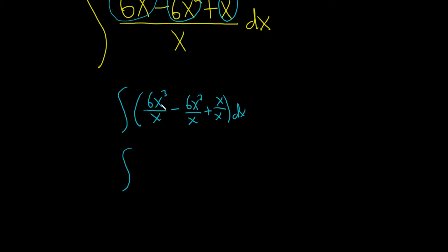Okay, we have x cubed over x so we're going to lose one of our x's. That's going to give us parentheses 6x squared minus 6. We'll lose an x here so we're left with x, and then this is going to give us 1, and then parentheses dx.